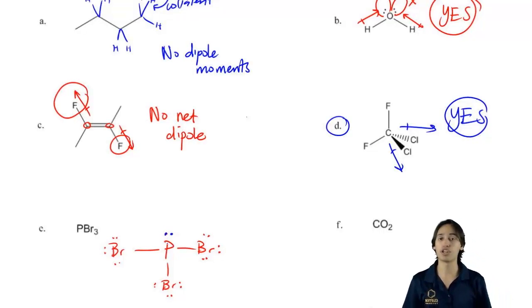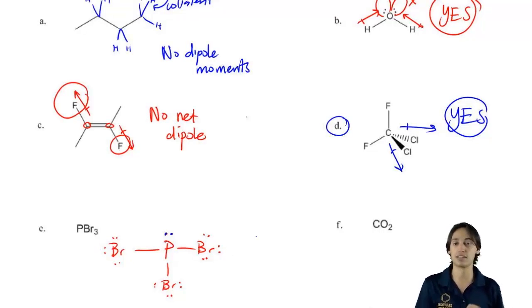Now when I calculate formal charges, let's just calculate formal charges to make sure I did it right. Bromine is fine, bromine is fine and phosphorus is also fine. This is the Lewis structure.